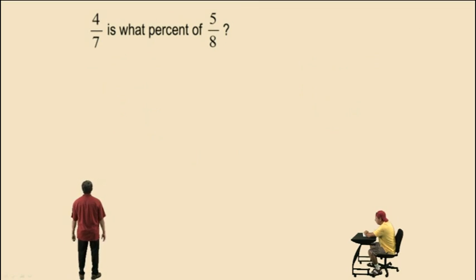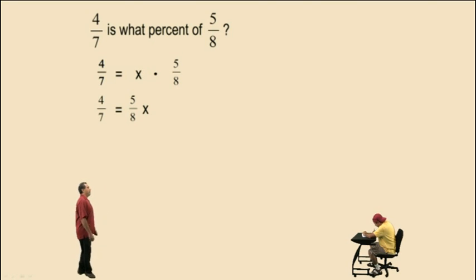4 sevenths is what percent of 5 eighths? Now don't get scared. We're going to use the force here. Okay. Let's read and translate. Okay, Charlie, pay attention. We have 4 sevenths is, there's our equal sign. What percent? We're going to represent that unknown quantity by the variable x. Of is multiplication. And bring down our 5 eighths. So there's our equation. 4 sevenths equals x times 5 eighths, or 5 eighths x.